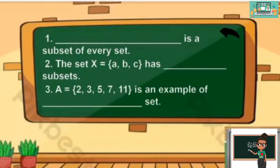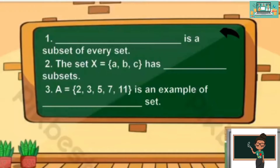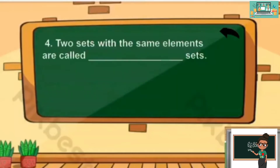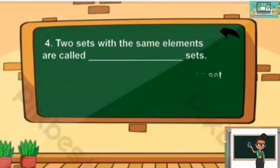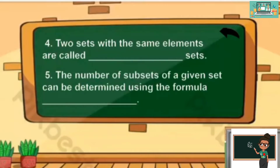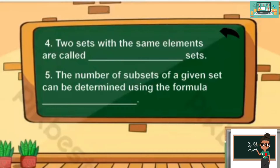Number 3: Set A consists of elements 2, 3, 5, 7, and 11 — is an example of a blank set. Number 4: Two sets with the same elements are called blank sets. And 5: The number of subsets of a given set can be determined using the formula blank.